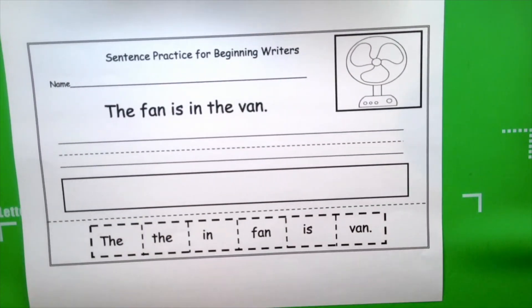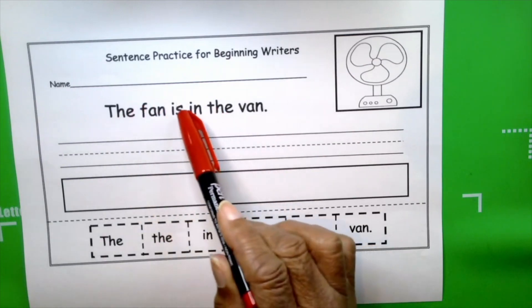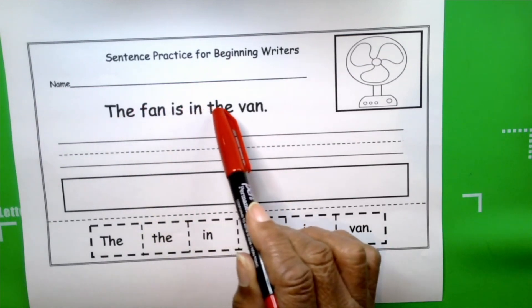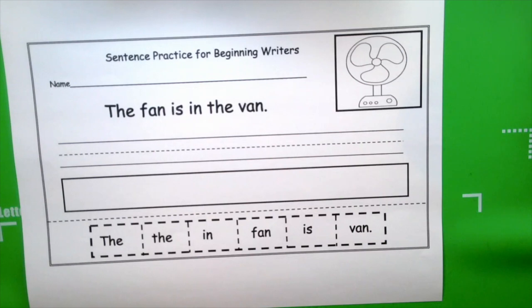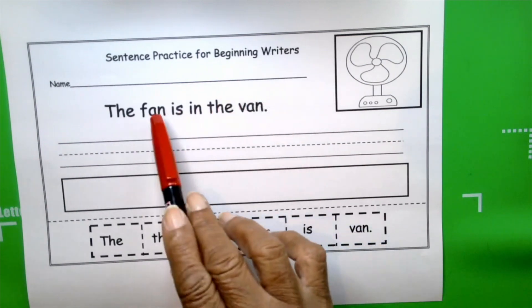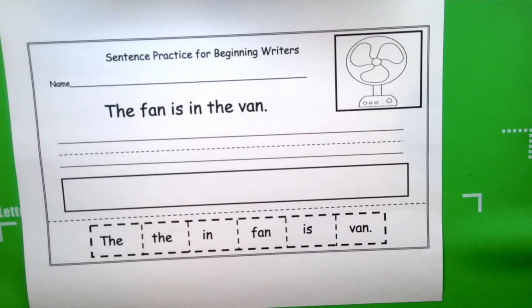Our sight words today are the, is, in, and the. We're working with four sight words today. The other words are words to know and they're also rhyming words. Fan, van. So we're learning a lot today boys and girls.